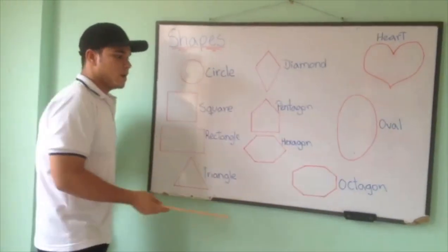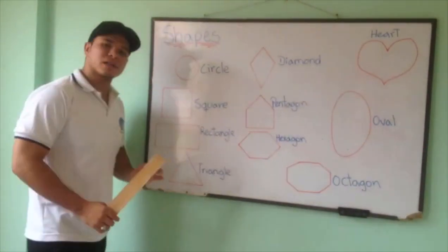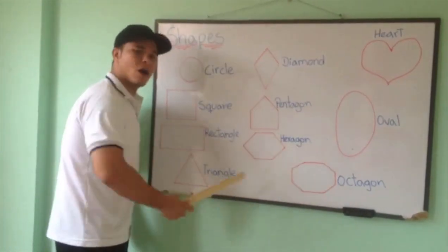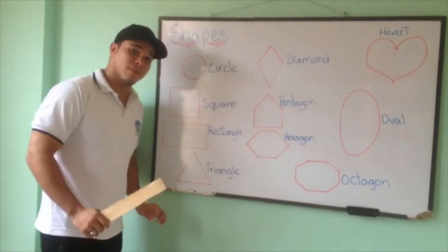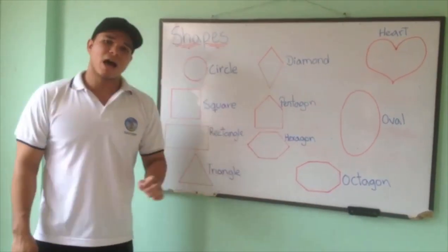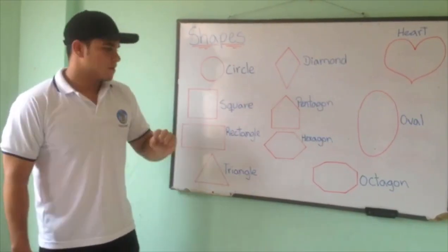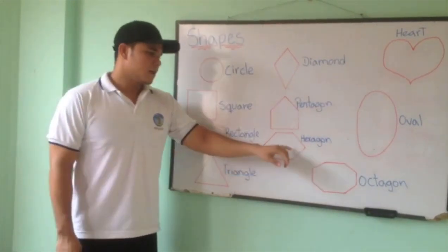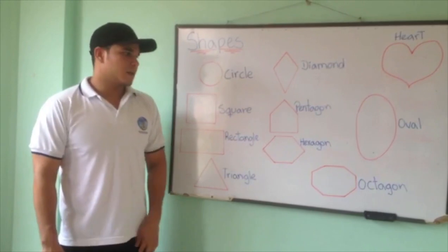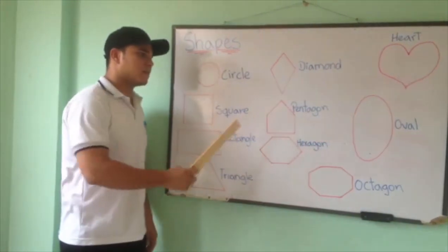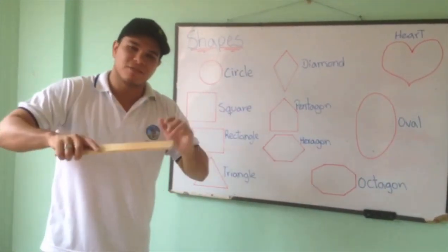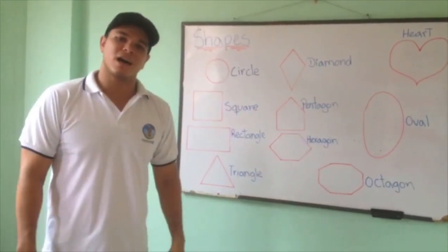And then we have the octagon. Octagon. Remember, the octagon has eight sides. The hexagon has six sides. And the pentagon only five sides. That's it for today guys.